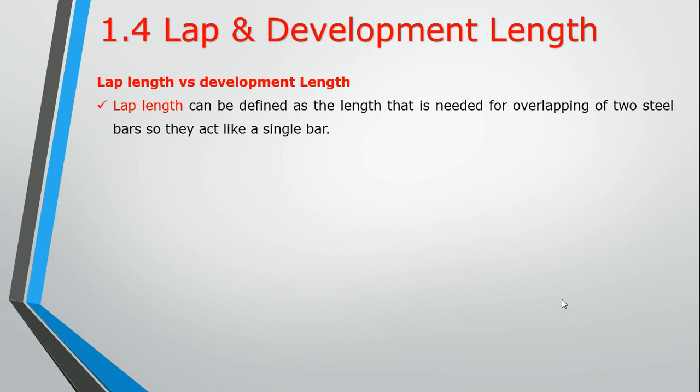Lap Length can be defined as the length that is needed for overlapping of two steel bars, so they act like a single bar. Two rebars tied up together is called a lap. It is the tie-up from a single bar to concrete.